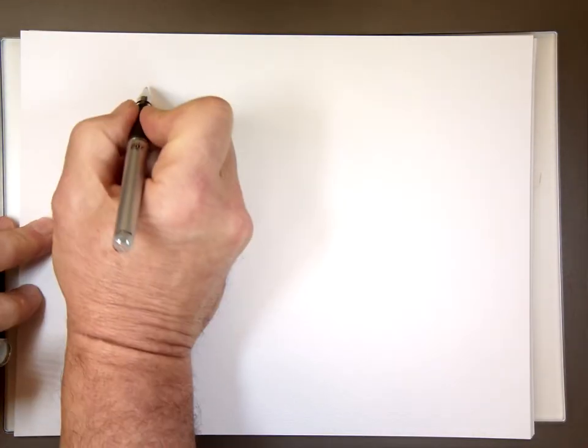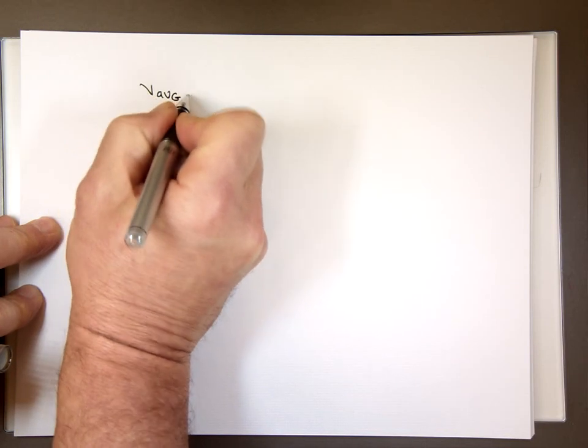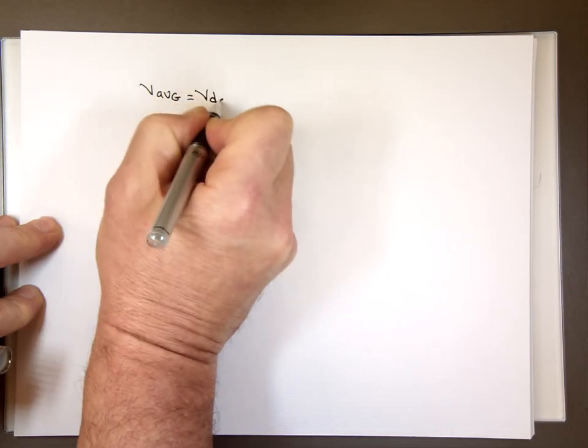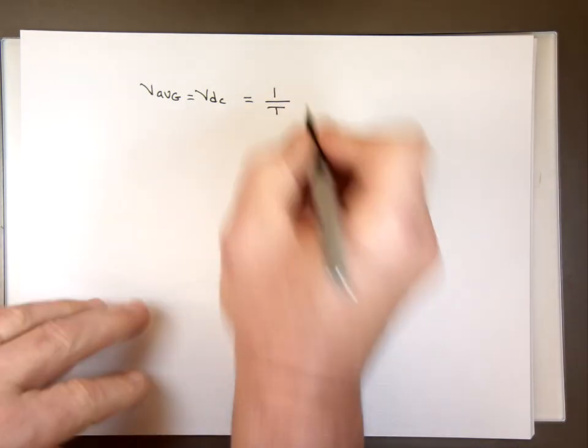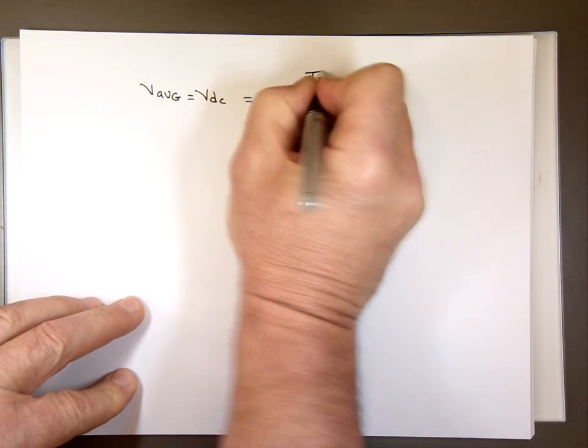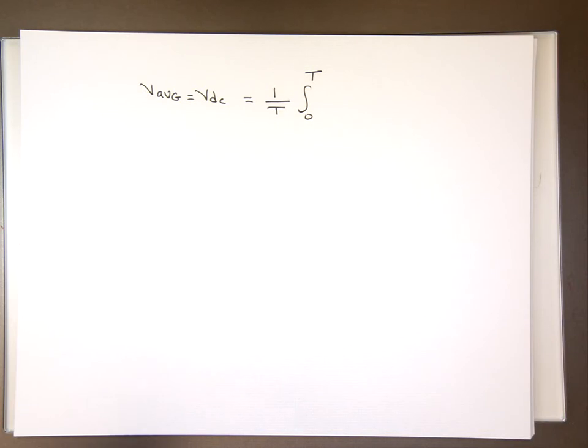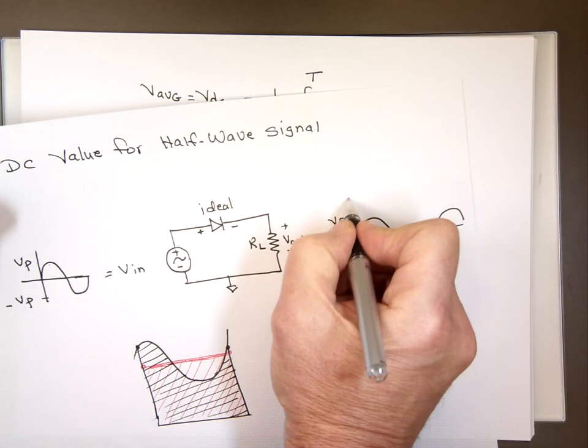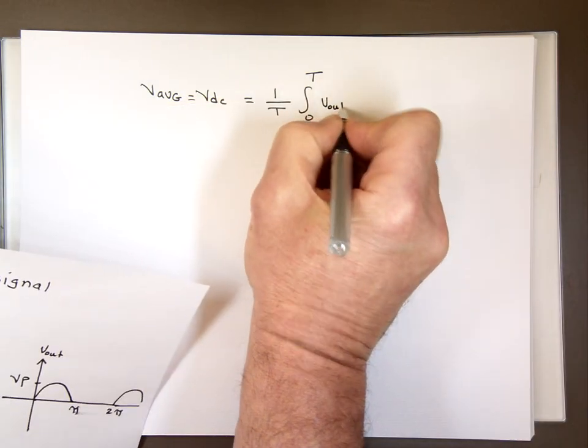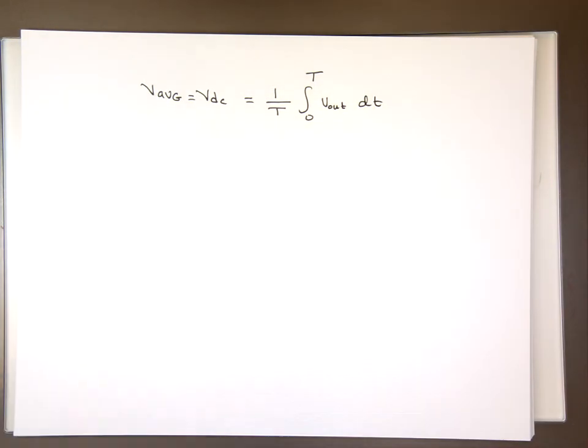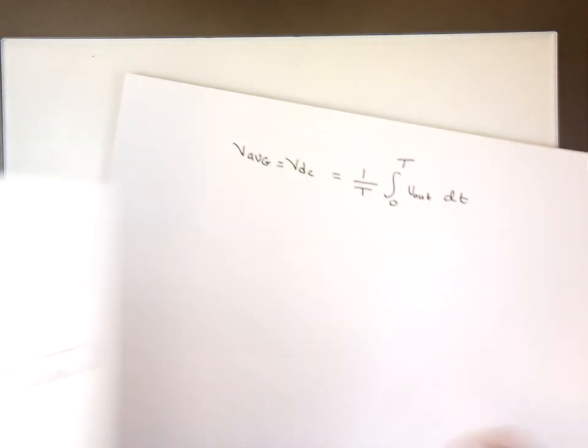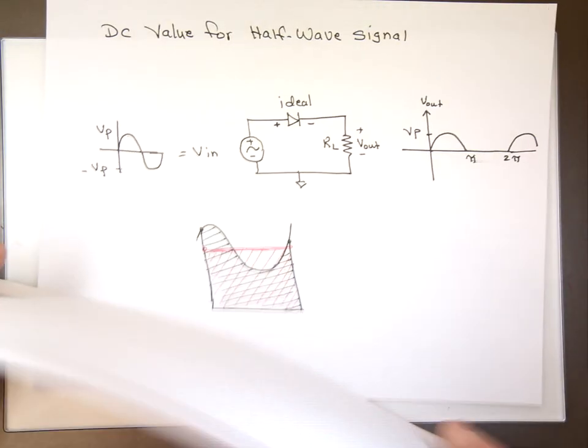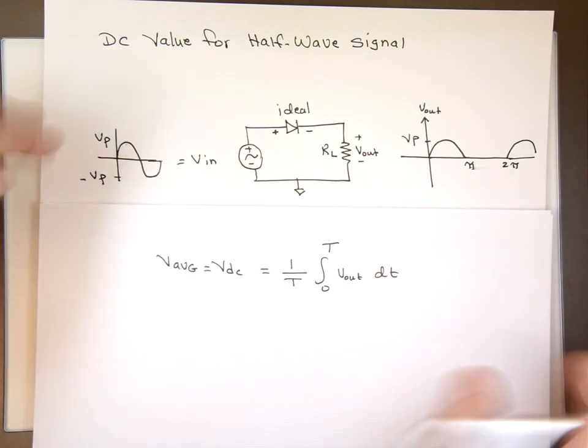V-Average is defined as, or V-Average or VDC, is 1 over the period, T is the period, the integral over a full period of the function that you have there. So if this is my V out here, the function with respect to T. Now how do you take the integral of that? I don't know if some of you have calculus or not, but if not, there's a lesson calculus there, quickly.